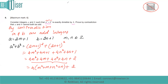We know that 4(m² + m + n² + n) is definitely a multiple of 4, since it equals 4 times some integer expression where m and n are integers. However, because 2 is added to this multiple of 4, the entire expression a² + b² cannot be a multiple of 4. This is our contradiction.